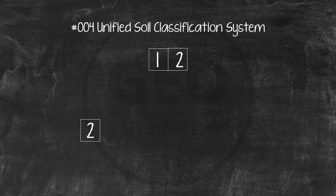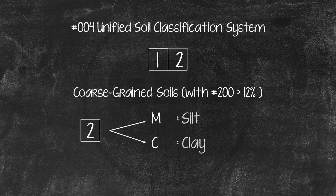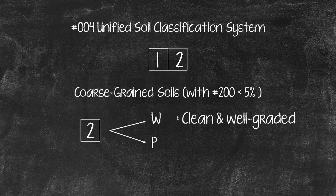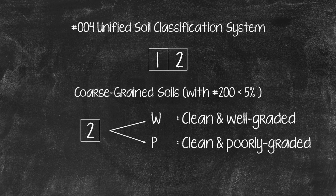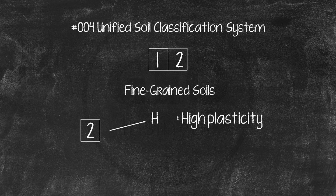The second letter gives additional information on the soil. For dirty coarse-grained soils, the second letter can be M or C, indicating that the gravel or sand has a significant amount of silt or clay particles in it. For clean coarse-grained soils, the second letter can be W or P. W indicates the gravel or sand is clean and well-graded, meaning all particle sizes are more or less represented. P indicates it is clean and poorly graded, meaning not all particle sizes are represented. For fine-grained soils, the second letter can be H (high plasticity, high liquid limit, and high PI) or L (low plasticity, low liquid limit, and low PI).